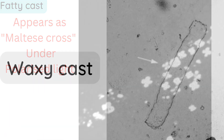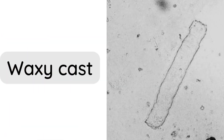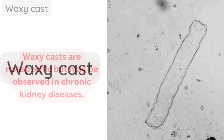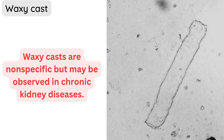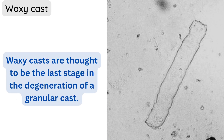Fifth: waxy casts. These are associated with end-stage renal disease and represent the advanced stage of chronic kidney disease. The waxy appearance indicates advanced tubular degeneration and atrophy.